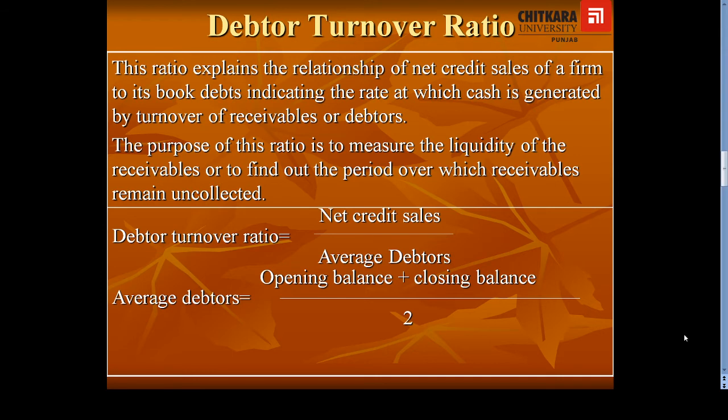The formula for calculating Debtors Turnover Ratio is net credit sales divided by average debtors. Net credit sales would be calculated by subtracting cash sales from net sales. And average debtors will be calculated by adding the opening balance of debtors and closing balance of debtors, divided by 2. So in this way we would calculate Debtors Turnover Ratio.